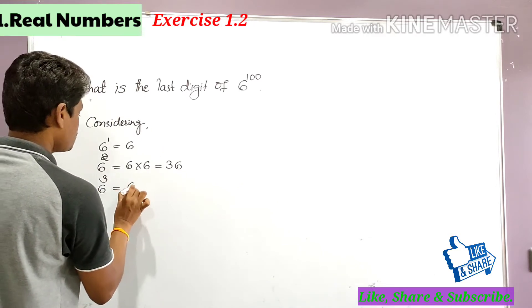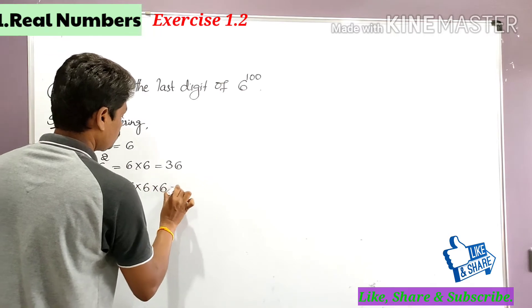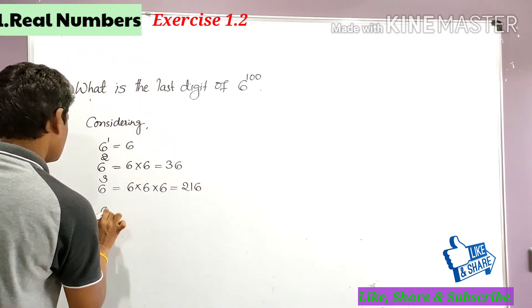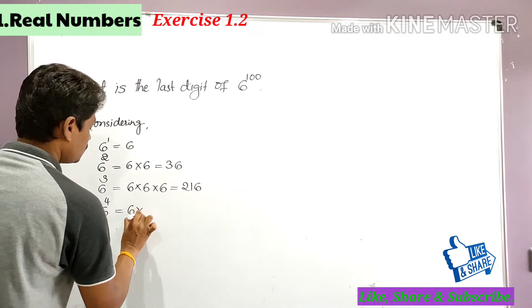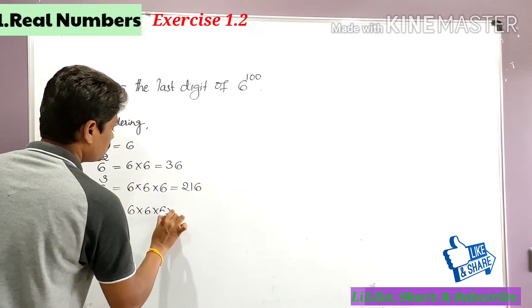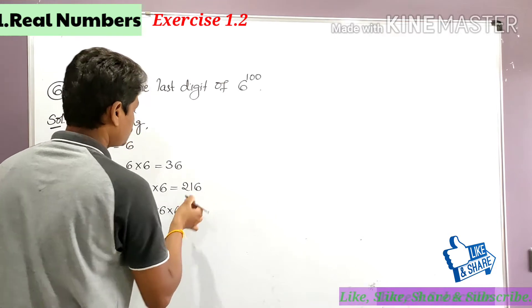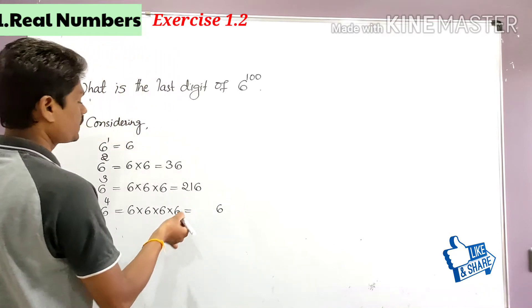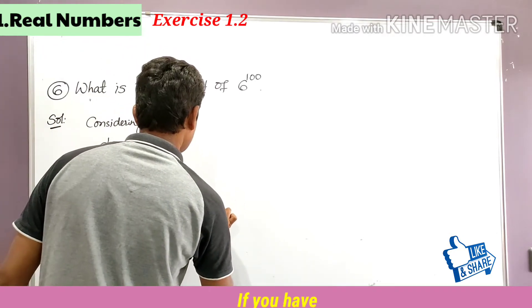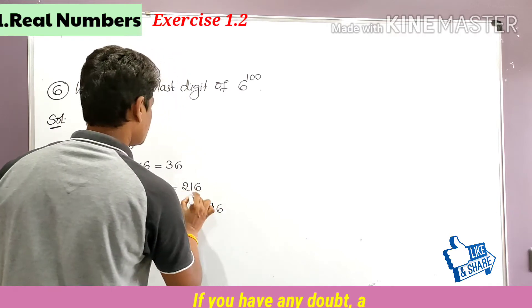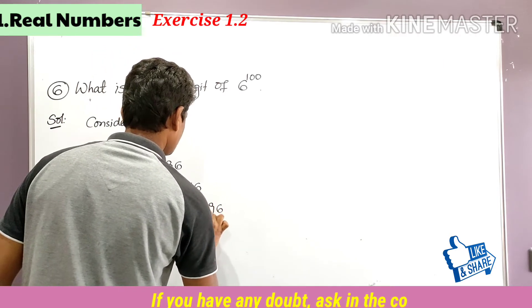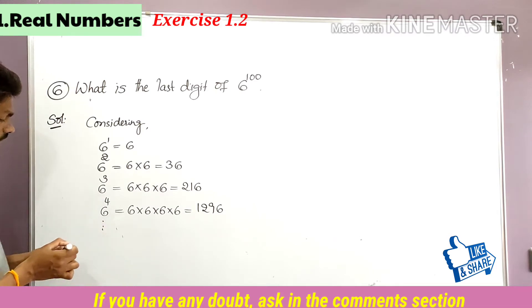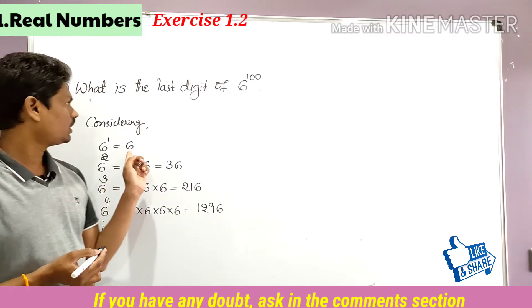6 to the power 3 is equal to 6 into 6 into 6, so 36 into 6 is 216. In the same way, 6 to the power 4 is equal to 6 into 6 into 6 into 6, so 216 into 6 is 1296. If you observe 6 to the power 1, 2, 3, 4, in every number the last digit is 6 only.